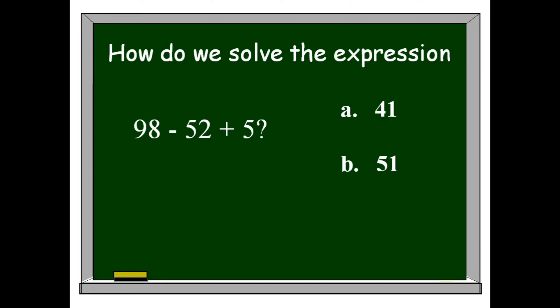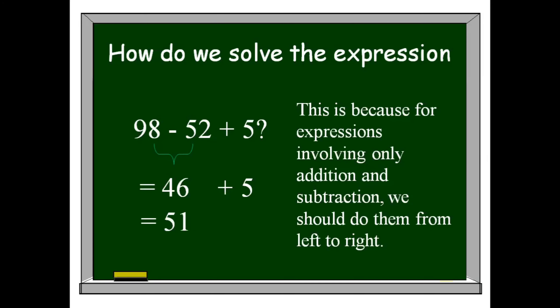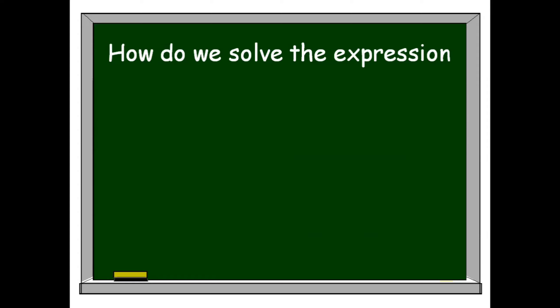Let's solve. First, we're going to subtract 52 from 98: 98 minus 52 is 46, and then we're going to add 5. 46 plus 5 is 51. The correct answer is letter B, 51. This is because for expressions involving only addition and subtraction, we should do them from left to right.